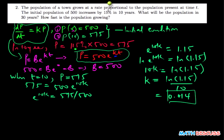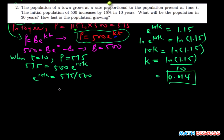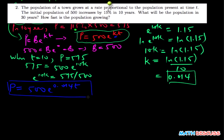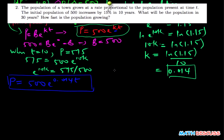Therefore, I can rewrite the full solution. My new value of p is going to be p equals 500 e to the power 0.014t. This is the solution of the differential equation given the initial conditions. Now the next thing is how do we find the population in 30 years? That simply means find p when t is 30.